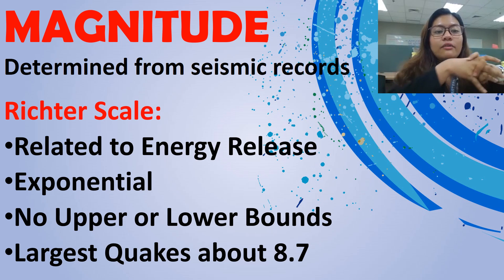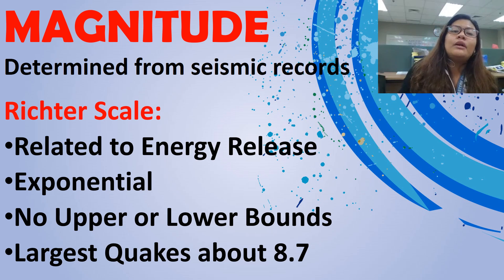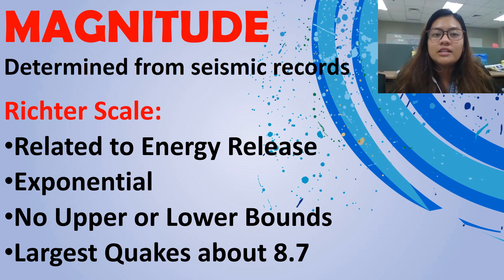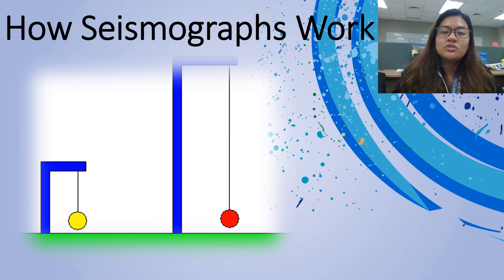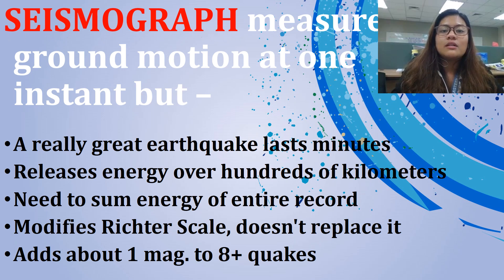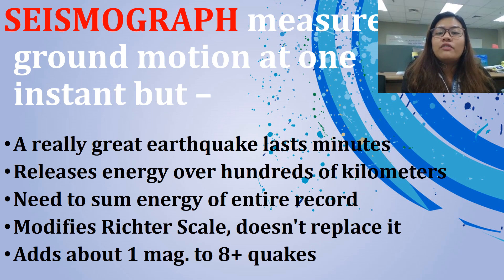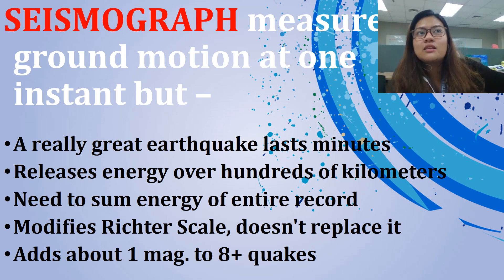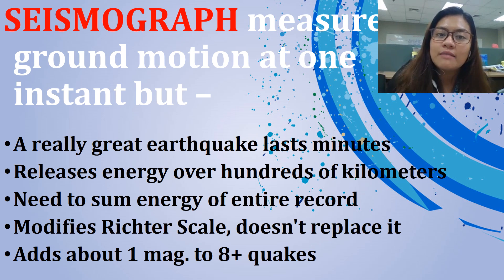Next is magnitude. The Richter scale is related to the energy released by the earthquake itself — it is exponential with no upper or lower bounds. Large earthquakes are about magnitude 8.7. This is how a seismograph works as a demonstration of how they measure earthquakes. Seismographic measures ground motion at one instant, but a really great earthquake can last minutes and release energy over hundreds of kilometers. That's why even if the epicenter is in Mindoro, we can feel it in Manila. This modifies the Richter scale but does not replace it, adding about 1 magnitude unit to magnitude 8+ earthquakes.